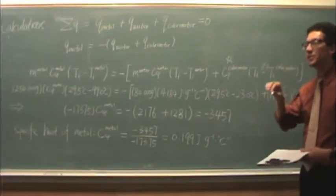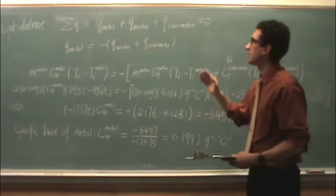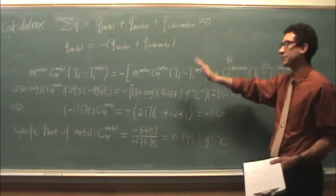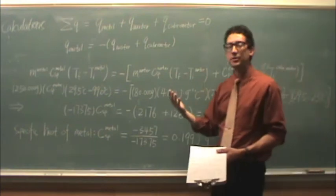When you set up the calculation for part two, it's similar to part one. The sum of the q's will equal zero. That's the law of conservation of energy. Well, what q's are there?